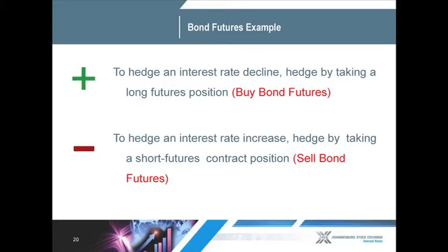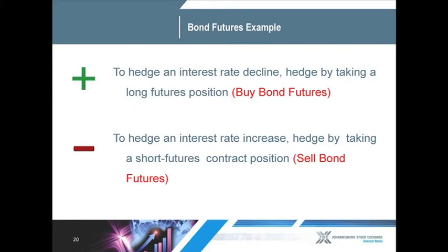Let's look at some bond futures examples. If we're looking for an interest rate decline, we're looking to buy a bond future — go long. To hedge an upward interest rate movement, we would sell the bond future. Specifically, if a corporate treasurer expects to issue debt in three months' time, his main risk would be that interest rates rise over the next three months, making his bond issue much more expensive. In order to hedge against this, he would enter the bond futures market and sell bond futures, thereby allowing the profit made on the bond future to offset the loss that he would incur on issuing the debt at a later point in time.